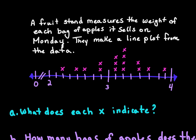They make a line plot from the data. Remember that each X represents each time they weigh a bag of apples. We need to look carefully at how the space between the whole numbers 2, 3, and 4 is divided. Counting the sections: one, two, three, four, five, six, seven — and the next whole is eight. So each section is broken up into eighths.